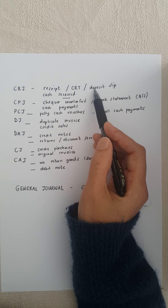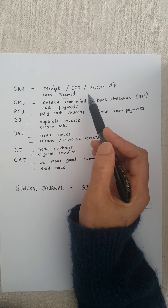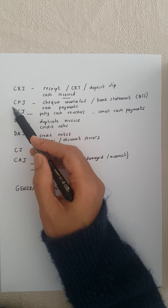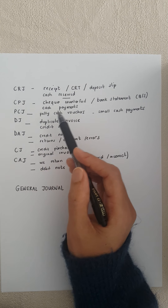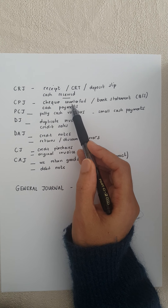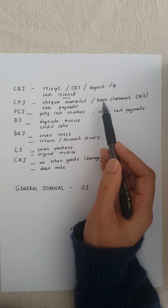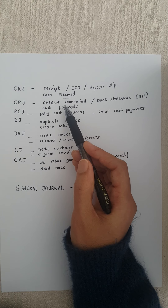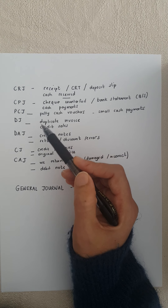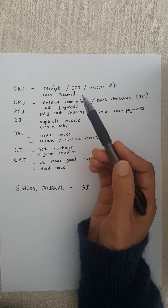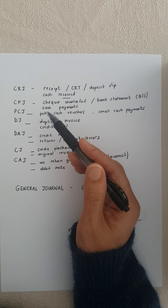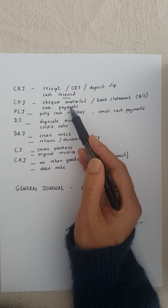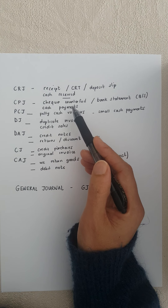We are debiting our bank account. Then we have a cash payments journal, the CPJ. We use a cheque counterfoil or a bank statement as our source document. We record all the cash payments that we are making in our business — all the money that's going out — and our bank account is getting credited.